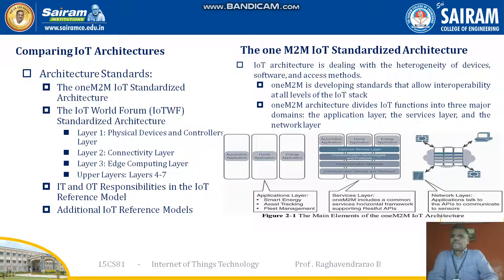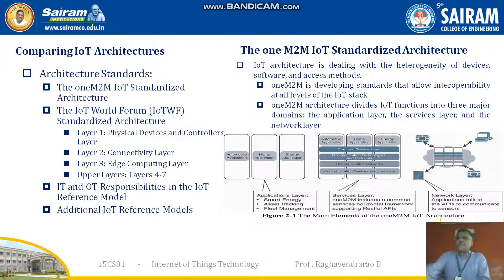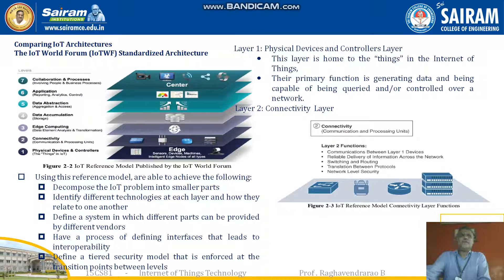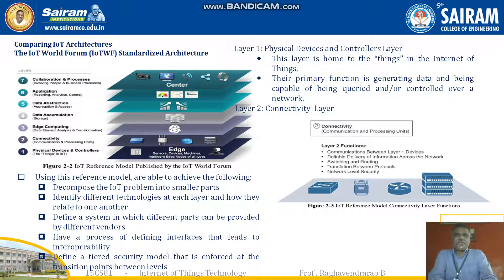In the application layer, you have smart energy, asset tracking, field management, and many other applications. In the service layer, M2M includes a common services horizontal framework supporting RESTful APIs. The network layer is where application links communicate to sensors via APIs. The IoTWF reference model has a seven-layer network going from the edge all the way to the applications.